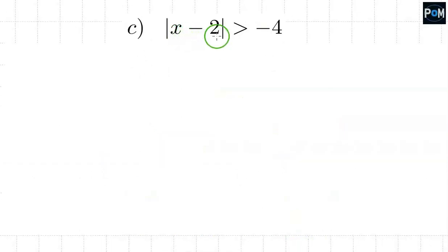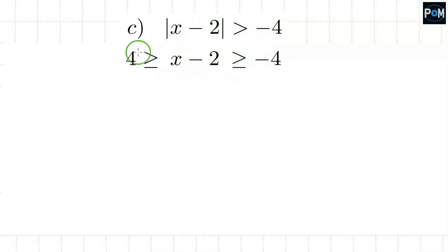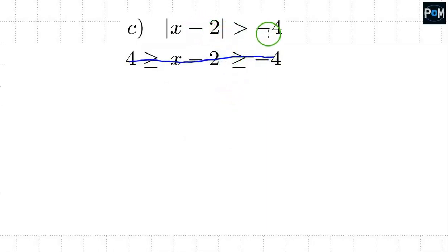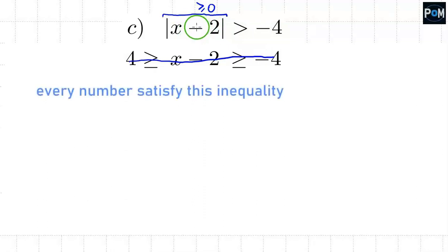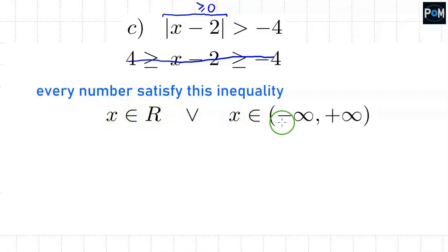Example c: the absolute value of x minus 2 is greater than negative 4. One might want to rewrite this without the absolute value, but this is a special case. The absolute value of anything is never a negative number — it's always greater than or equal to zero. The smallest possible result is zero. That's why such an inequality will always be satisfied. Every number satisfies it, and its solution is x belongs to all real numbers, or the interval from minus infinity to plus infinity.